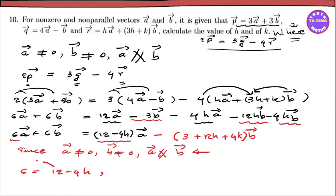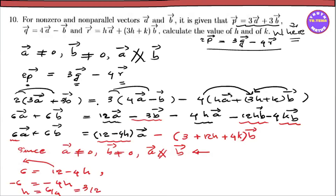H is equal to minus 12, so minus 6 equals minus 4h. Therefore h equals 6 divided by 4, so h equals 3 by 2. Now let's find h: h is equal to 2, and h is equal to 6.